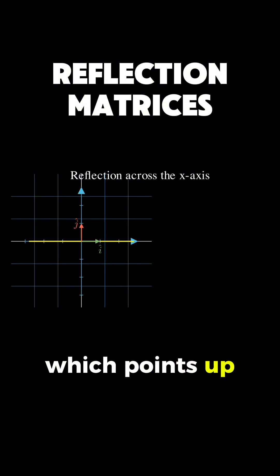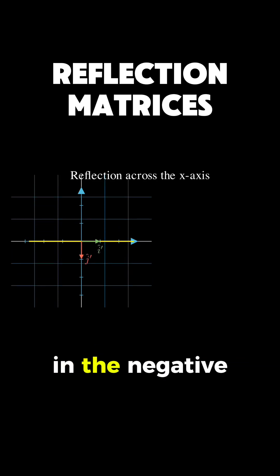But the j, which points up along the y-axis, gets flipped down to a point in the negative y-direction, so it maps to 0 and negative 1.